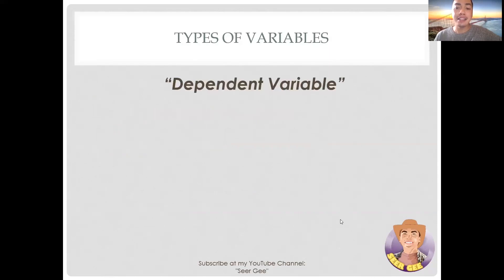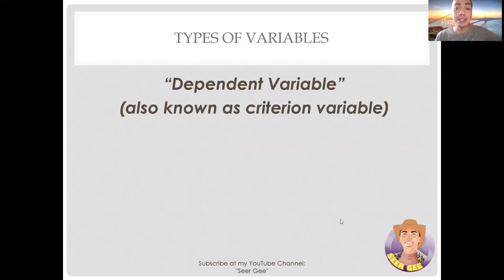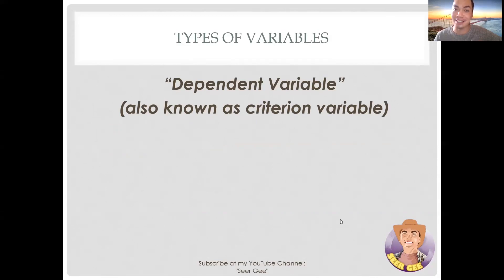Let us start discussing the dependent variable, also known as criterion variable. But before that, are you one of those who get confused about the signs — arrivals and departure — in the airport? Do I go to arrivals because I'm arriving at the airport? Or does the person I'm picking up go to arrivals because they are arriving on the plane? I get confused on things like that too.